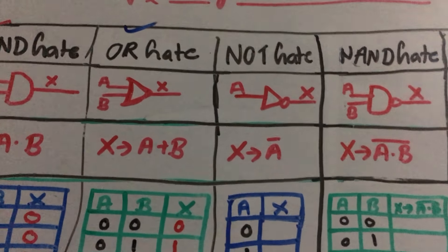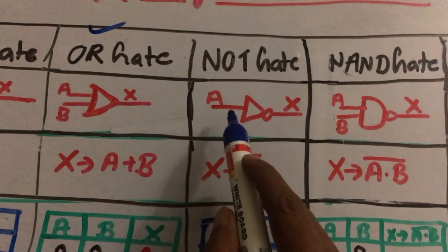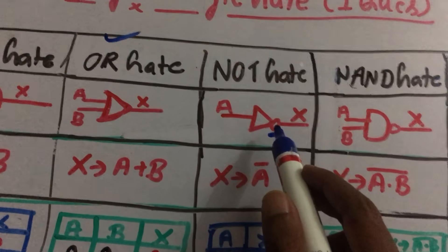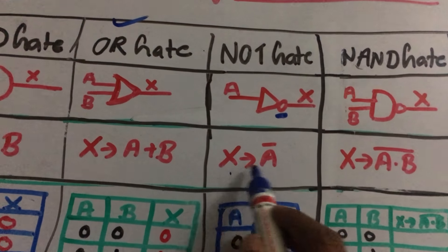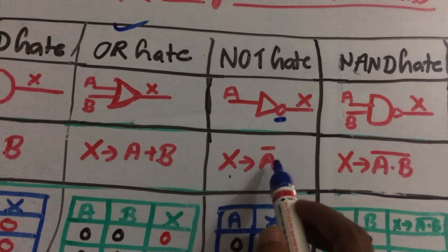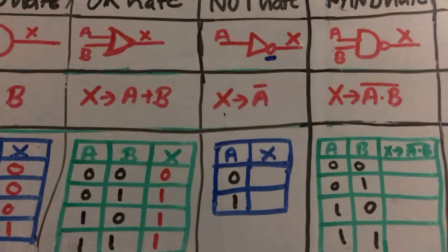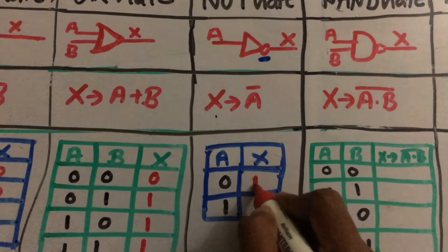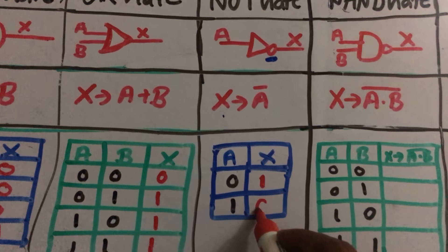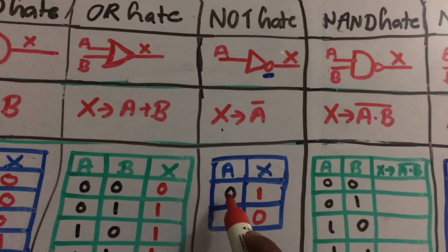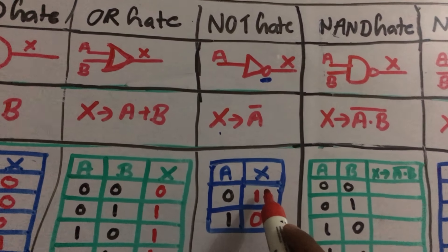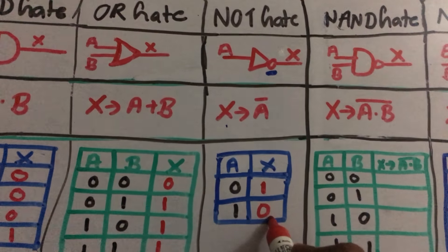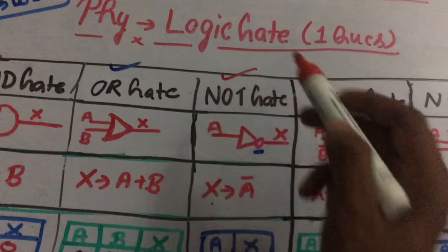Next is the NOT gate. The symbol for the NOT gate has a small circular portion which denotes it as a NOT gate. The formula is X = Ā (A-bar), meaning it gives the complement — the reverse of the input. The truth table is: if input is 0 then output is 1, and if input is 1 then output is 0. So if input is low, output is high, and vice versa.